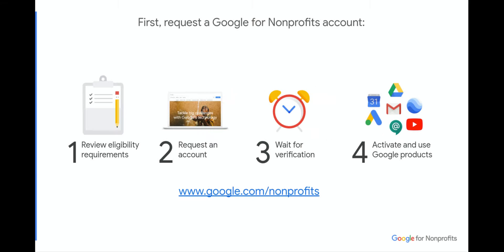The first step to getting an Ad Grants account is to request a Google for Nonprofits account. If you navigate to google.com/nonprofits, you can review our eligibility requirements and, when you're ready, request an account. After verification of your nonprofit status, with a Google for Nonprofits account, you can activate and use Google products in the platform.